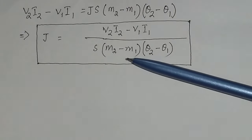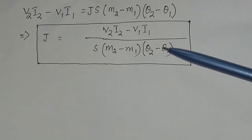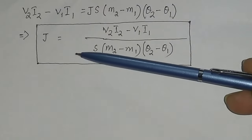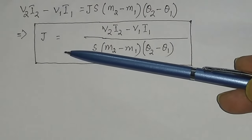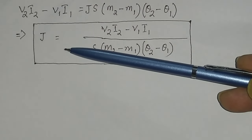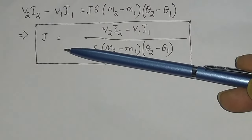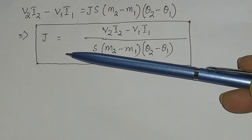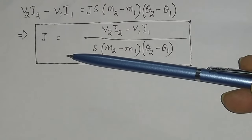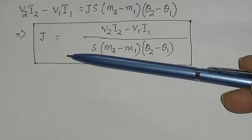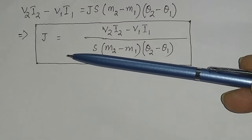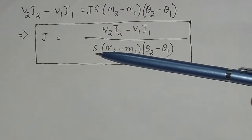After putting all these values, you can calculate the value of J — that is the mechanical equivalent of heat. It is a very easy method: how to calculate the mechanical equivalent of heat by using Callender and Byrne's constant flow method.